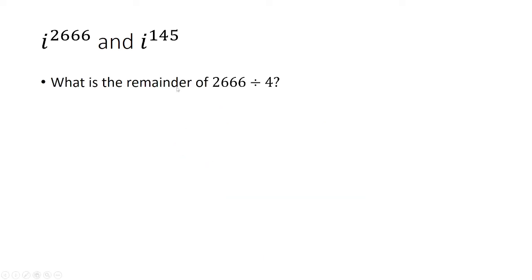So what is the remainder when I divide 2,666 by 4? Well, the trick here is you can simplify it by just dividing 66 by 4. You basically only care about the last two digits, so you can ignore everything else.